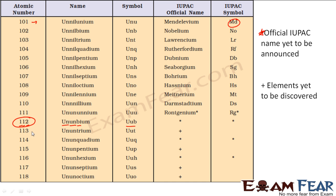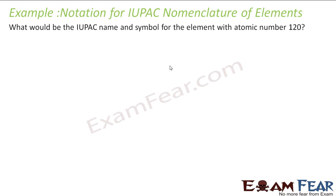Element 113 has not even been discovered yet. This table lists all elements with atomic number more than 100, showing which are recognized by IUPAC. Now let's take a worked example: we need to find the IUPAC temporary name and symbol for element with atomic number 120.